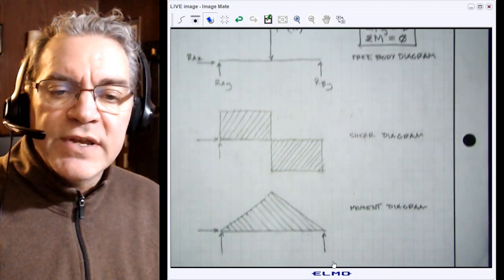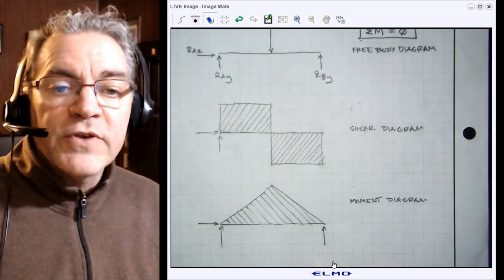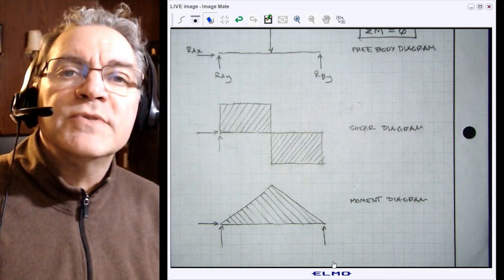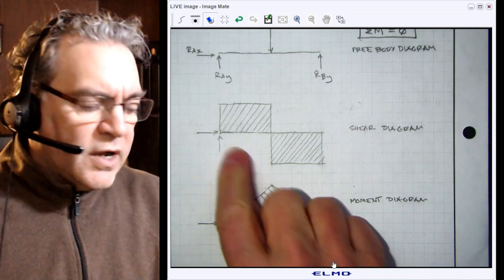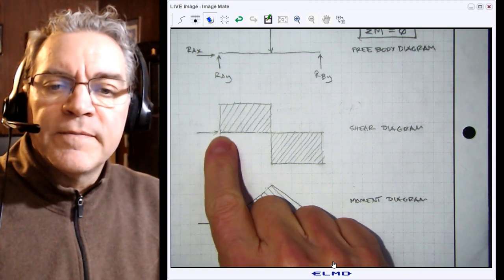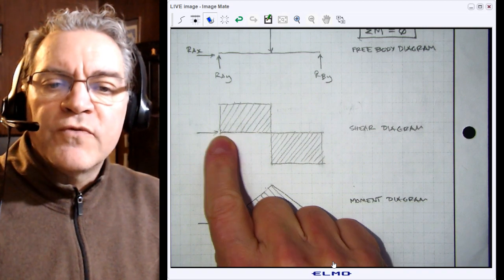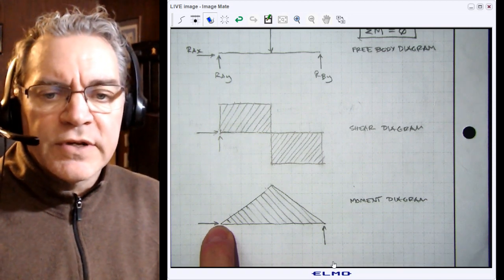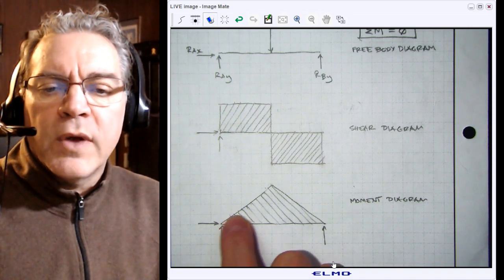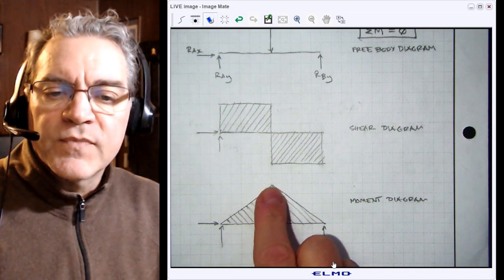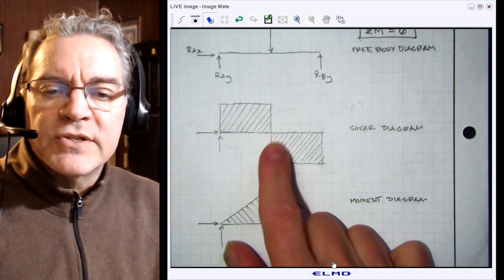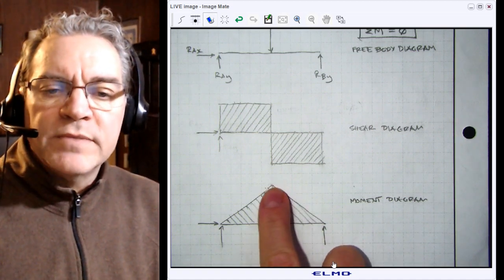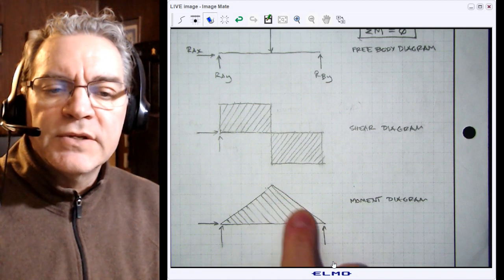Now moving down to the moment diagram. Hopefully you'll recall that a moment is the product of a force times its perpendicular distance. If the reaction force here, as we move further away, if the distance is zero then the moment is zero, and then the further we get away you would expect the moment to increase. That's the case until we reach the center of the beam where the applied load P is, and then the moment decreases until we get back to zero.